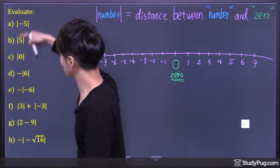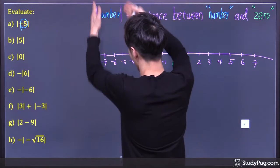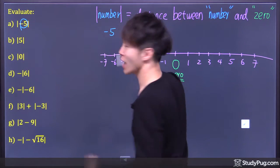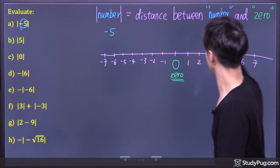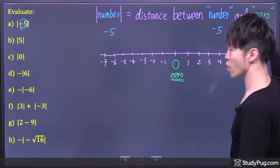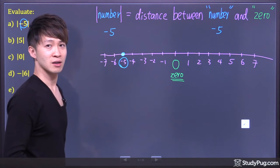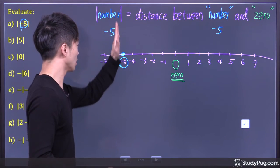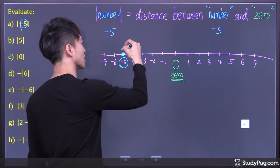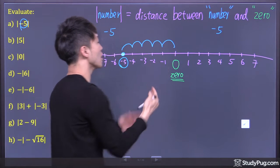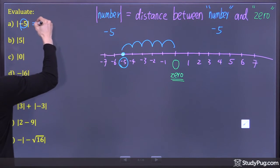Question A: absolute value of negative 5. Inside the absolute value we have the number negative 5, and that is defined as the distance between negative 5 and 0. So negative 5 is right here. What's the distance between negative 5 and 0? Negative 5 is 1, 2, 3, 4, 5 — five units away from 0. So the answer is 5.